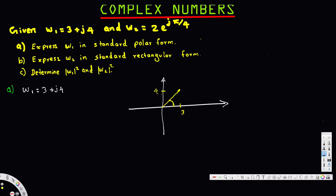To find the distance we use the Pythagorean theorem. 4 squared is 16, 3 squared is 9, so 16 plus 9 equals 25, and the square root of 25 is 5. So r is equal to 5.